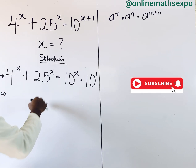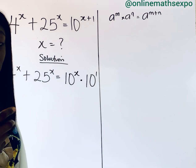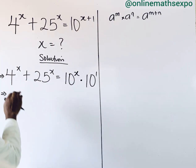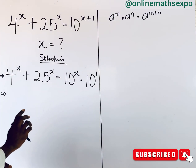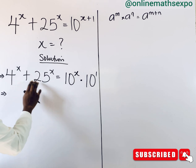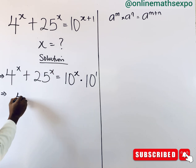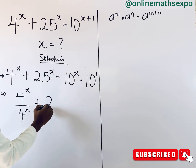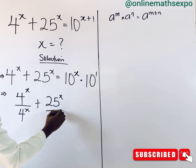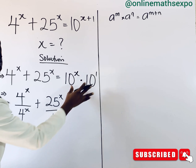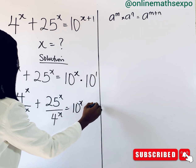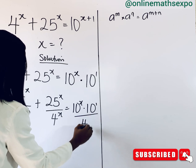You can choose to divide by this term or by this other term — whichever one you use, you are going to get the same result. In this tutorial, I'm going to show you how to use this one to divide, so we are going to use it to divide each of these terms. We are going to have 4 raised to the power of x all over 4 raised to the power of x, plus 25 to the power of x divided by 4 raised to the power of x. Also do the same on the right: 10 to the power of x times 10 to the power of 1, divided by 4 to the power of x.